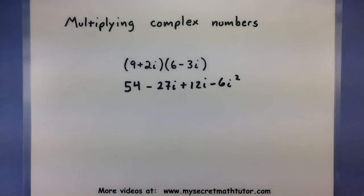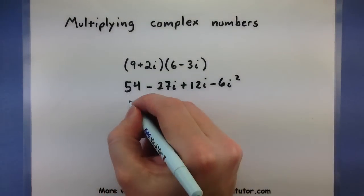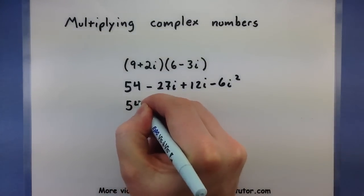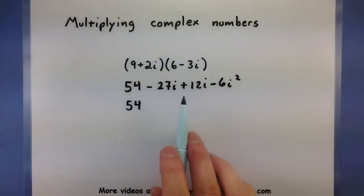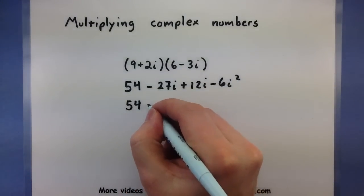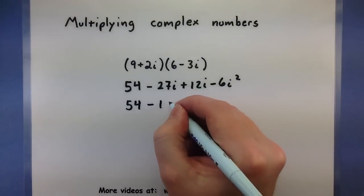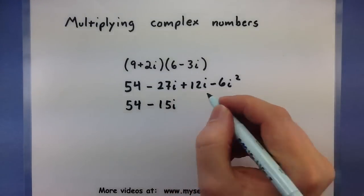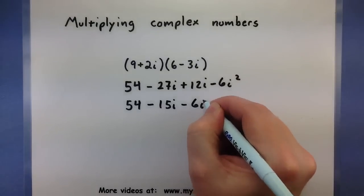Now of course we want to run through this and simplify it as much as possible. 54, then I have minus 27 and plus 12. This will leave us with minus 15i minus 6i squared.